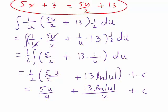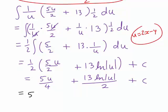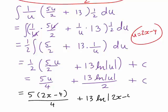Finally, we can now rewrite this in terms of x. Because u was 2x minus 4, substituting that back in, we will obtain 5 times 2x minus 4 divided by 4 plus 13 ln absolute value of 2x minus 4 divided by 2 plus constant c. And depending on how we wanted to present the answer, we could expand that 5 times 2x minus 4 if appropriate. This means we have now evaluated our integral.